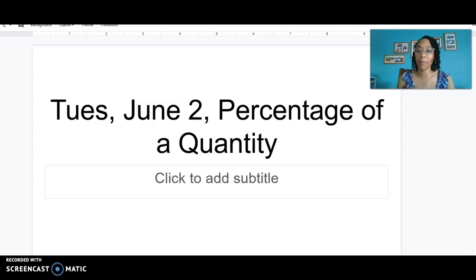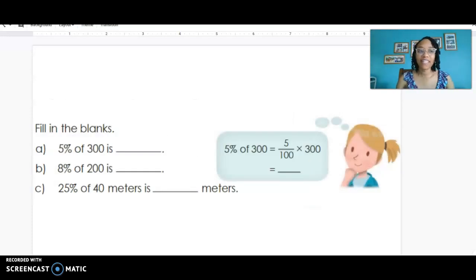Now we're going to look at something a little bit different: a percentage of a quantity, particularly percents of something that's not 100. Check it out to figure out how we do it. So in these problems we're looking to find 5% of 300, 8% of 200, or 25% of 40.